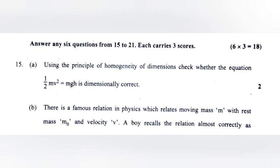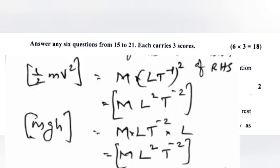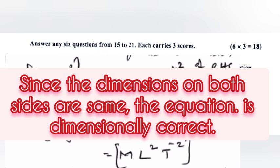Question 15A: Using the principle of homogeneity of dimension, check whether the equation half mv square is equal to mgh is dimensionally correct. Answer: According to homogeneity principle, dimension of LHS is equal to dimension of RHS. Half mv square equals m into lt raised to minus 1 the whole square, equals ml 2 t minus 2. Mgh equals m into lt raised to minus 2 into l equals ml 2 t minus 2. Since the dimension of both sides are same, the equation is dimensionally correct.